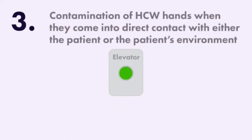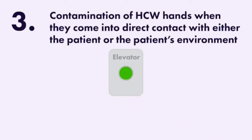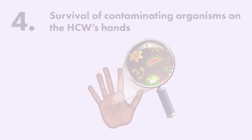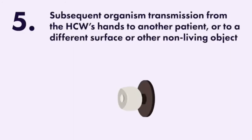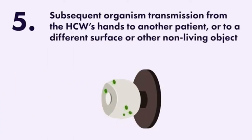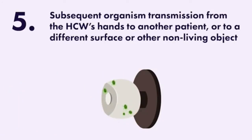The third step is contamination of healthcare workers' hands when they come into direct contact with either the patient or the patient's environment. The fourth is survival of contaminating organisms on the healthcare workers' hands. The fifth and final step is subsequent organism transmission from the healthcare workers' hands to another patient or to a different surface or non-living object.